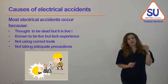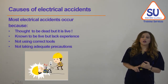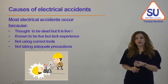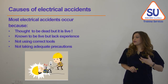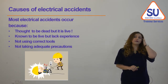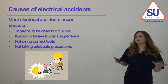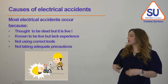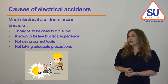The most common causes of electrical accidents can be summarized in four main points: the equipment is thought to be dead but is actually live; the equipment is known to be live but lack of experience causes people to deal with it incorrectly without taking the right level of precautions; failing to use the correct tools or equipment; and not taking adequate precautions when signs of damage, failures, overheating, or overloading are visible — the worker continues to use the equipment until an accident occurs.